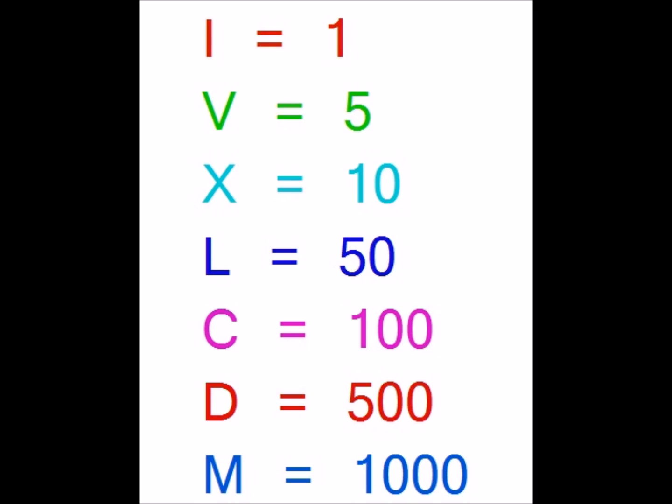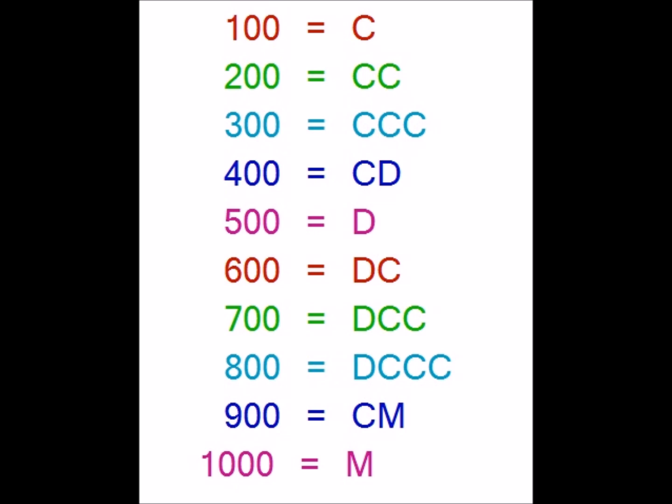In this lesson we are learning how to construct numbers from 100 to 1000. For this purpose we need to learn the remaining two basic symbols — D and M — which indicate 500 and 1000. Like we learned to construct numbers from 10 to 100, we are going to first cover 100, 200, 300, up to 1000.